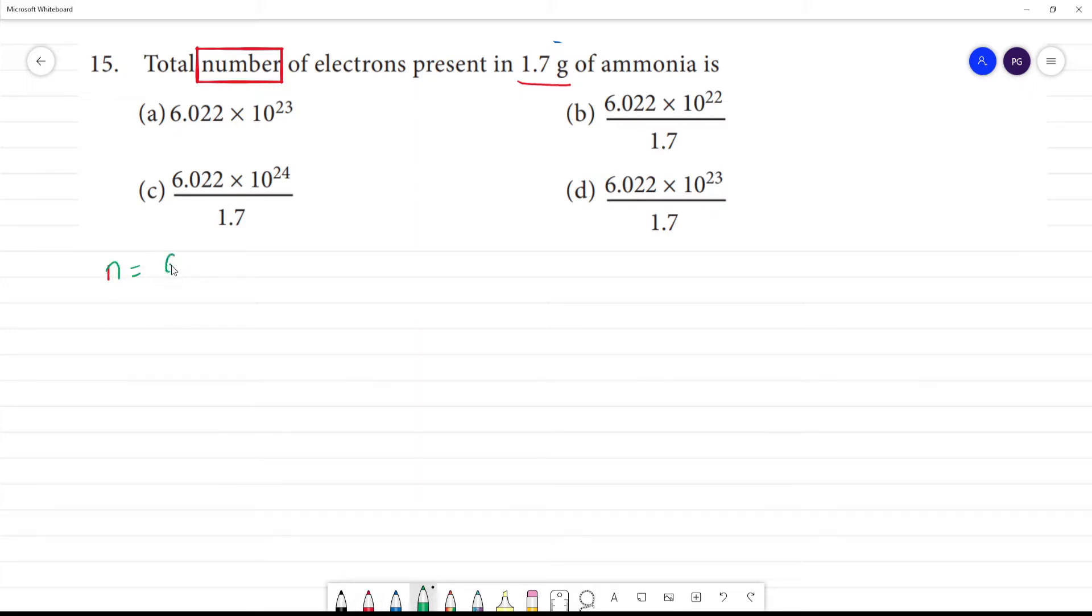N is equal to given weight by molecular weight. Otherwise, number of moles is calculated by N0 by Na. This is given volume by 22.4 liters of gas at STP.